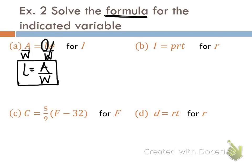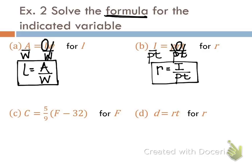Letter B — they want us to solve for R. Let's circle that R. There are two things keeping R from being alone: P and T. This is the simple interest formula. Since P and T are both multiplying R, the inverse operation is division, and we can divide both sides by PT at the same time. P over P is 1, T over T is 1, so we're left with R equals I over PT. We took the simple interest formula and rewrote it to give us a formula to find the rate.